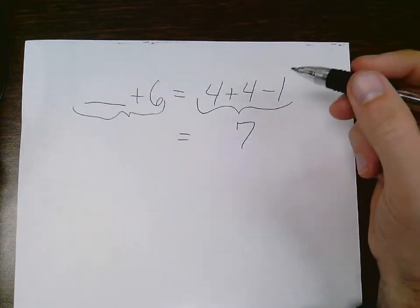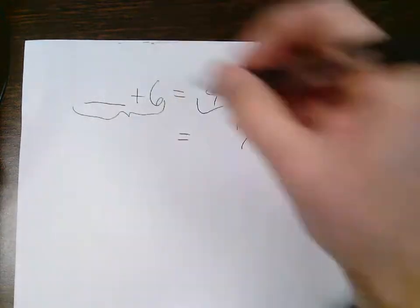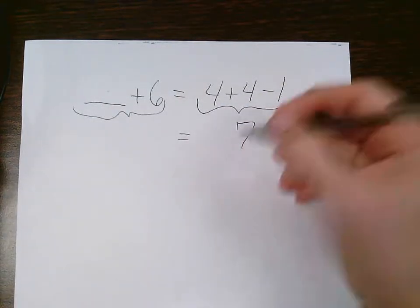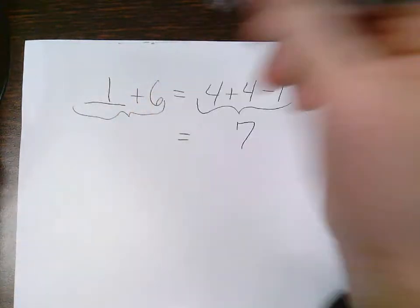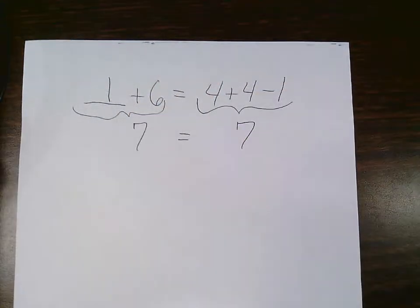So it needs to be a number. So what number will go in here that will equal 7? I can plug 1 in there. 1 plus 6 is 7. 7 equals 7.